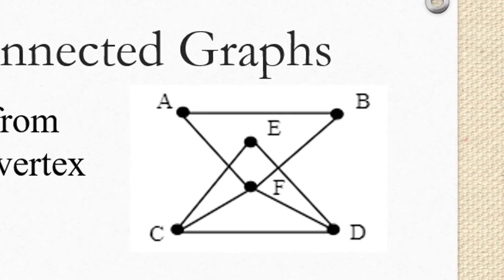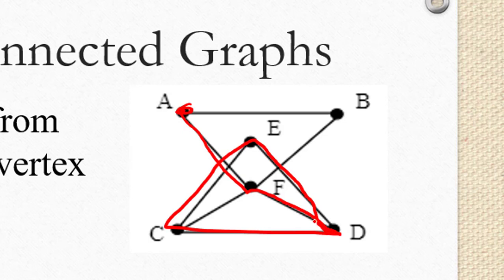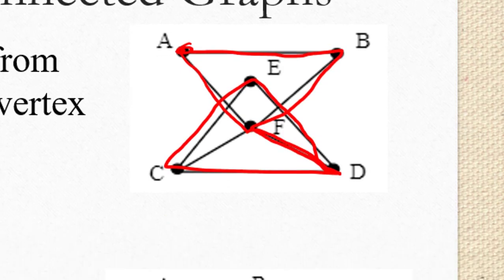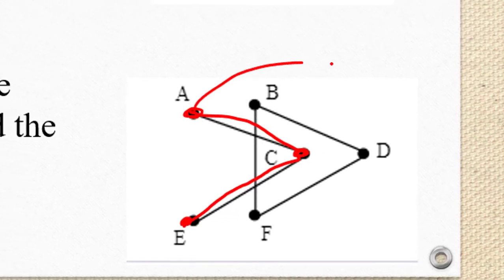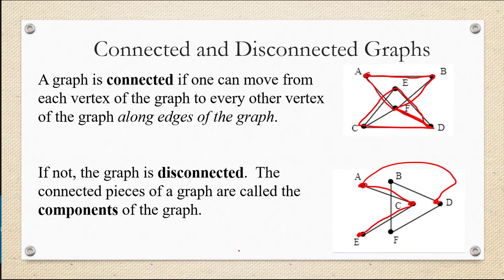In the graph on the top, we can travel from any vertex to any other vertex that we want to along various edges of the graph. We might have to take a funny looking journey, but we can always get there. Whereas in the graph on the bottom, the component ACE is completely separate from the component BDF. There is no way to get from, say, point A to point D without going off the path.